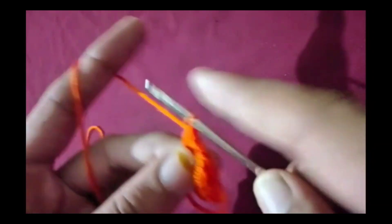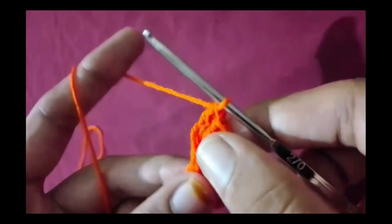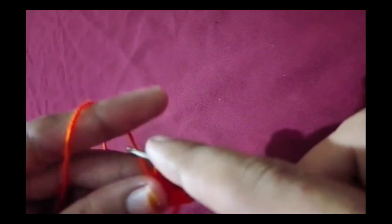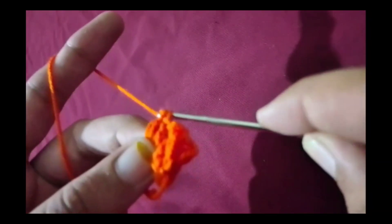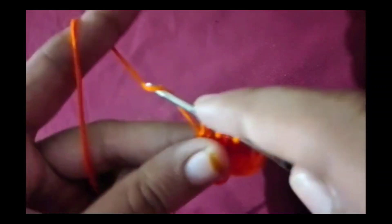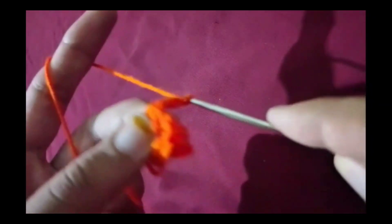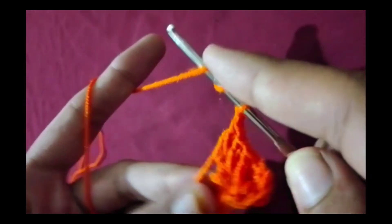To begin, make a slip knot. Now chain 4 stitches. After that, slip stitch into the first chain to make a small loop. This will be the center of your heart.